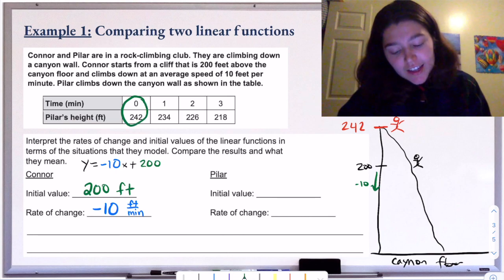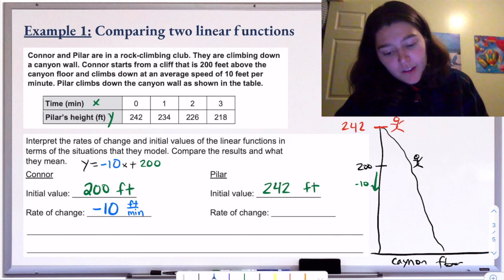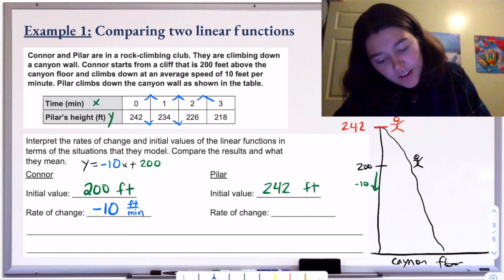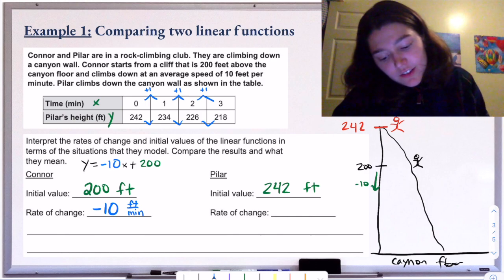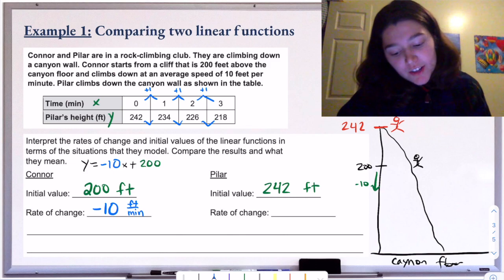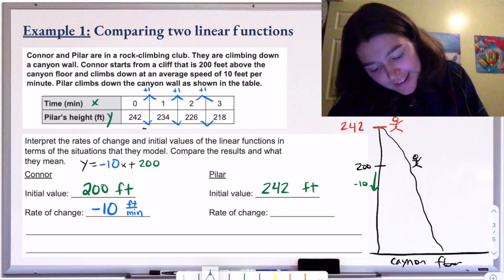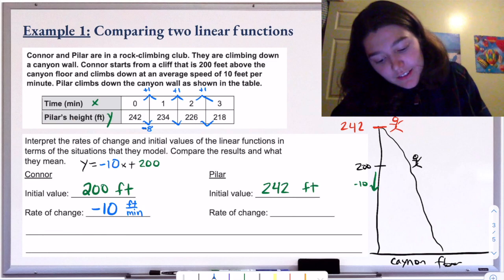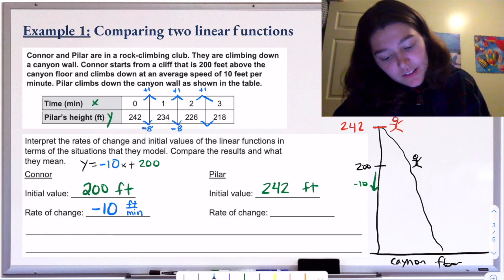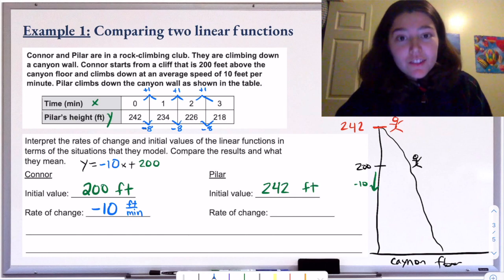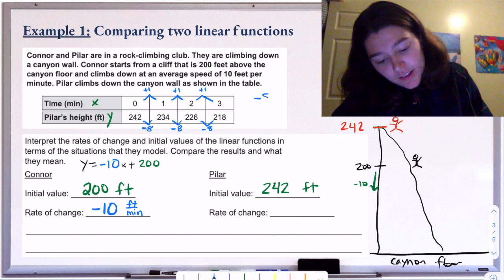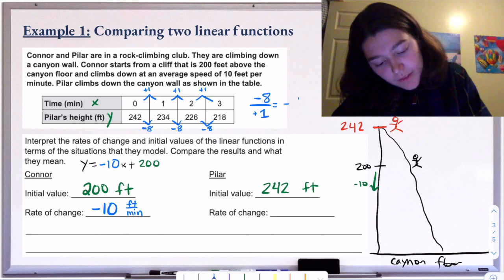Now let's find the same information for Pilar. The initial value is where Pilar is starting — the y-value when x is zero, which is 252 feet. For the rate of change, we find the difference in x and divide by the differences in y. The x increases by one each time. For the y values, she goes from 252 to 234 — down 8 — then 234 to 226, down 8, then 226 to 218, down 8. So the rate of change is negative 8 divided by positive 1, which is negative 8 feet per minute.